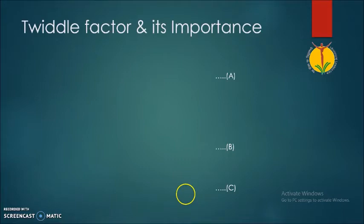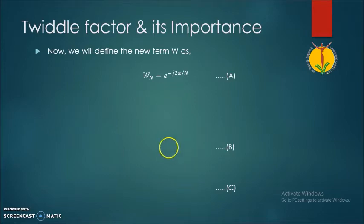Let us see the term twiddle factor. In the previous equation of the DFT, we have a term e raised to minus j2π by N. This term is called the twiddle factor, denoted by WN.